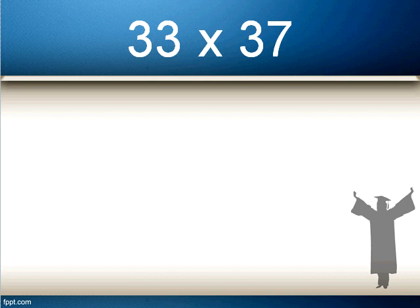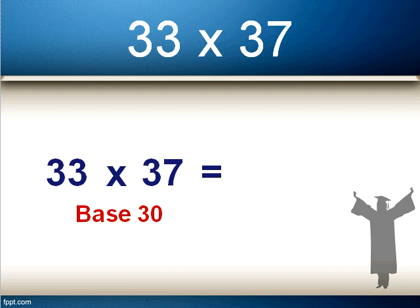Now let's look at 33 times 37. These are close to 30, so we'll use 30 as our base number. 33 is 3 more than 30, so plus 3; and 37 is 7 more than 30, so plus 7.